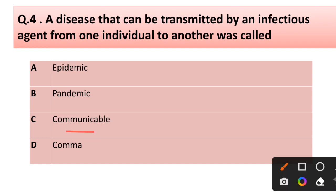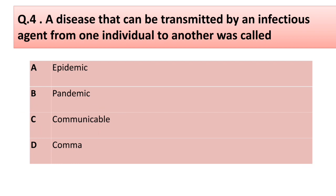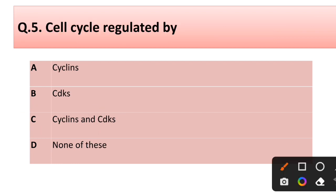Question number four: a disease that can be transmitted by an infectious agent from one individual to another is called — options: (a) epidemic, (b) pandemic, (c) communicable, (d) contagious. Correct answer is option C: communicable.